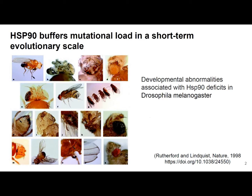Similar effects were shown in other organisms, but all such works were performed on a short-term evolutionary scale — that is, a scale of several generations. In this project, we hypothesized that Hsp90 can be a buffer of mutational load also on a long-term evolutionary scale.